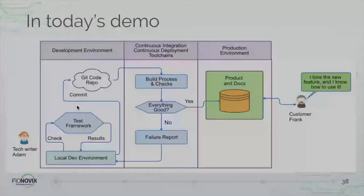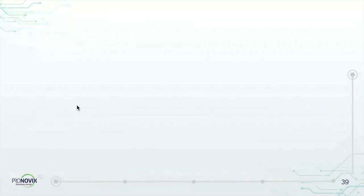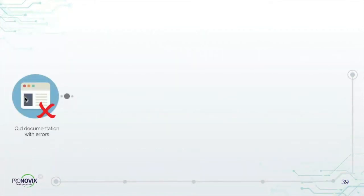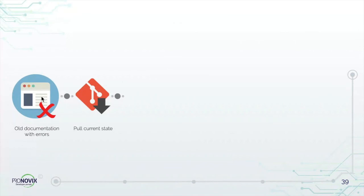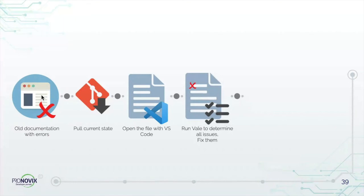Enough theory — let's put that linter into action. We're going to focus mostly on the developer environment and show you the workflow and basic usage of these tools. Let's suppose we have an old documentation page on our developer portal related to one of our API products called Moon Rover Photos. The text is in CommonMark-flavored Markdown format and, according to recent feedback from a user, it contains a broken link and some typos. We're going to pull the current state and open it with VS Code.